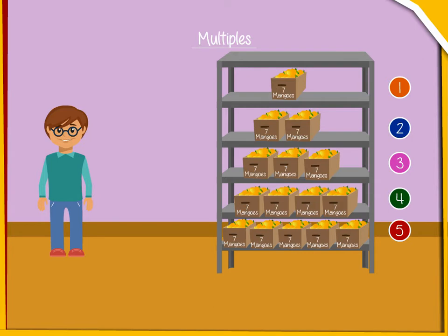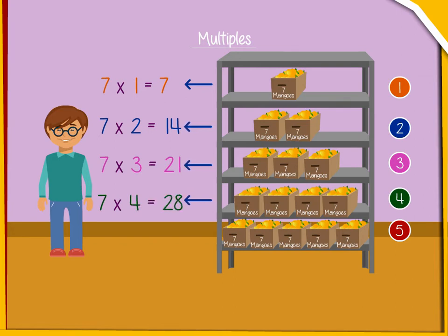Let us now see how many mangoes are there in each row. The second row has seven into two equal to fourteen mangoes. Likewise, third row has seven into three is equal to twenty-one mangoes. Fourth row has seven into four is equal to twenty-eight mangoes and fifth row has seven into five is equal to thirty-five mangoes and so on.